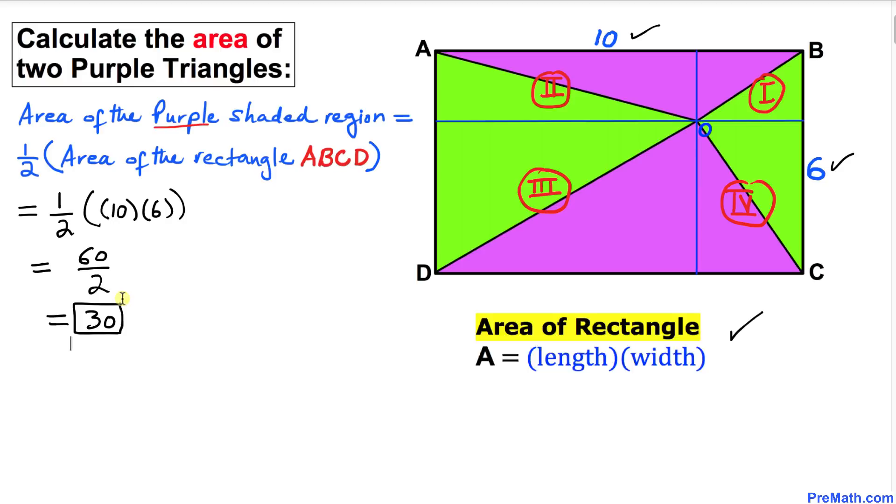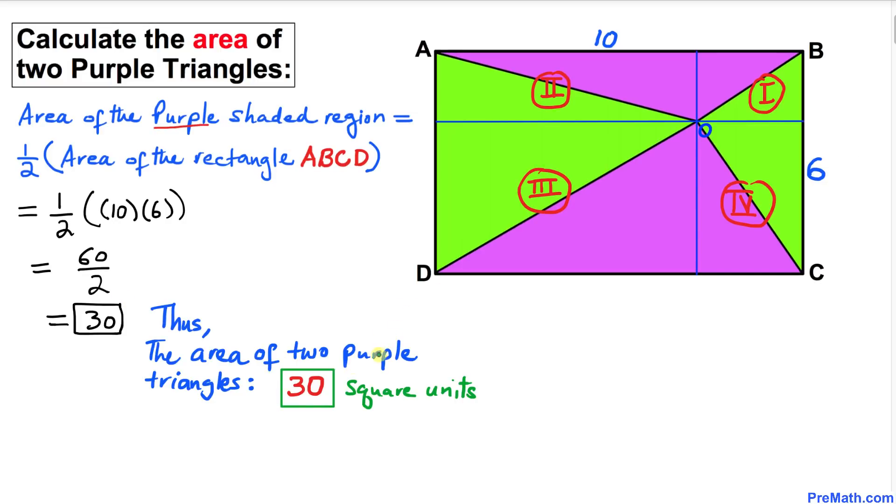Thus, the area of these two purple triangles turns out to be 30 square units, and that's our final answer. Thanks for watching and please don't forget to subscribe to my channel for more exciting videos.